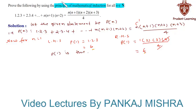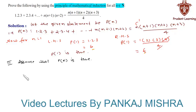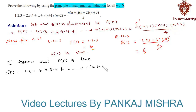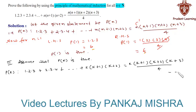In our second step, we assume that P(k) is true for some positive integer k. Therefore we have P(k): 1·2·3 + 2·3·4 + ... + k(k+1)(k+2) = k(k+1)(k+2)(k+3) divided by 4. Let us call this equation 1.